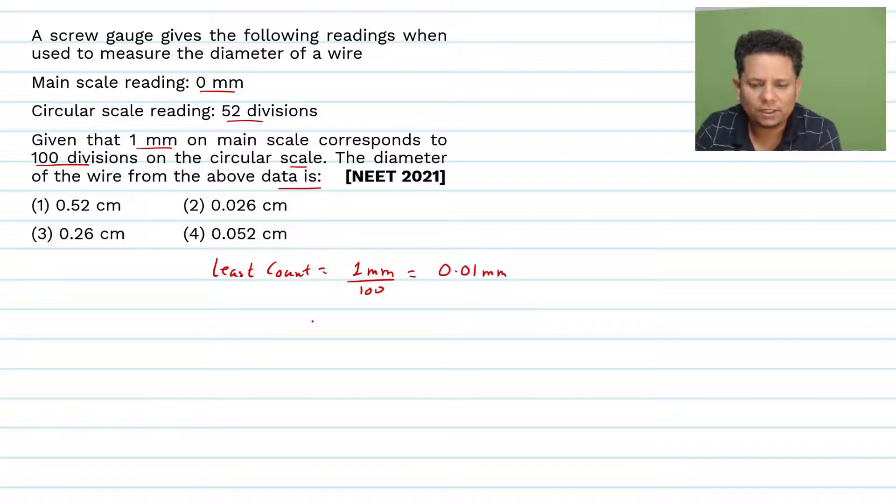Now, diameter of the wire: diameter equals main scale reading plus your circular scale reading.